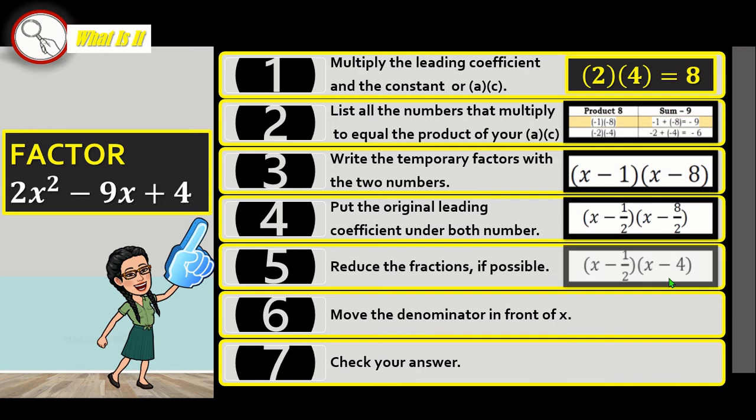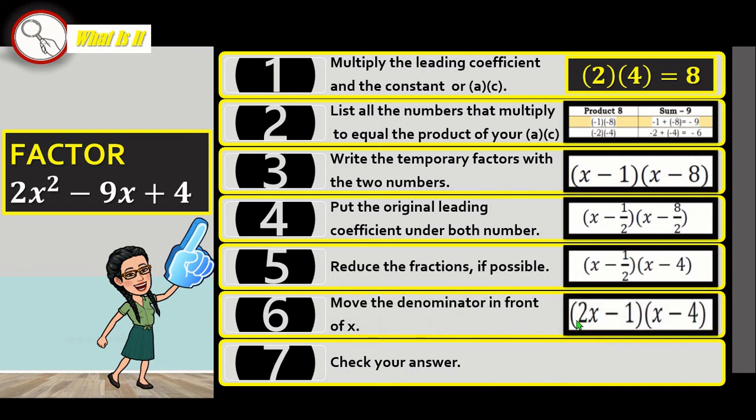Then reduce the fractions as possible. You cannot reduce 1 half, for you cannot express it as a whole number, so leave it as it is. But here we have 8 over 2, we can reduce it to a whole number which is 4. And for this, that which we cannot reduce, we are going to put that in front of our X here.